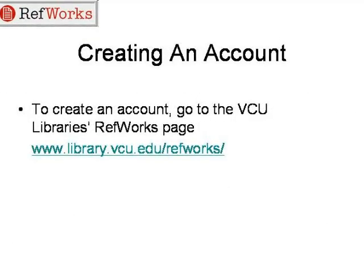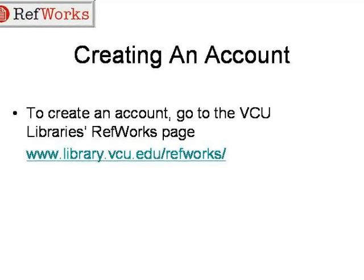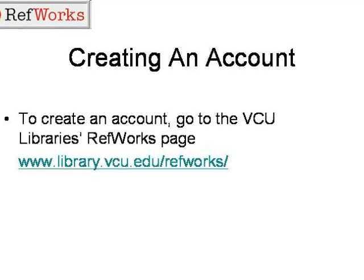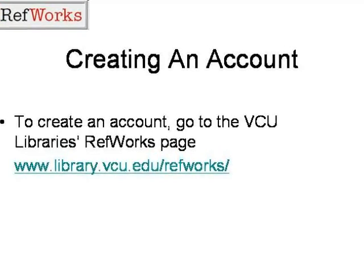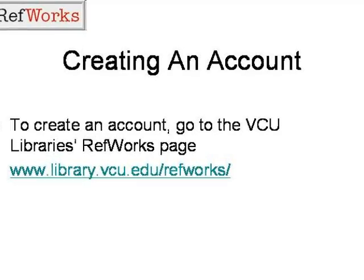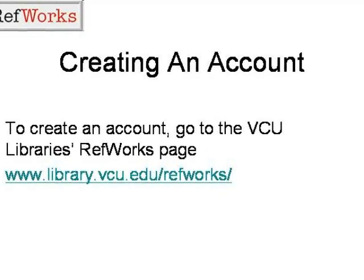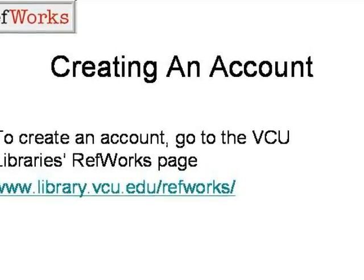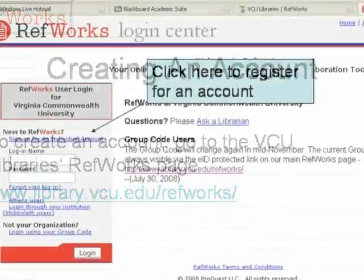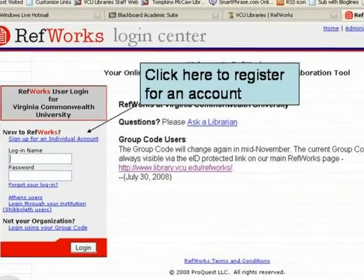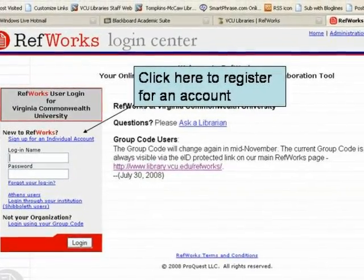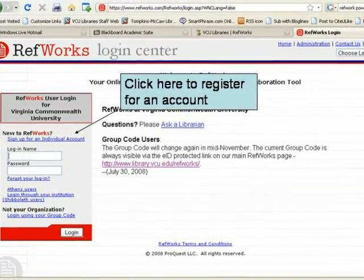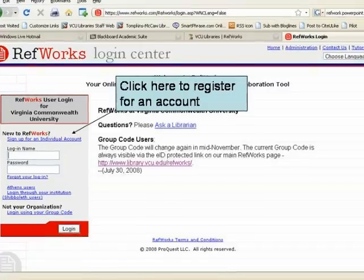Today we will talk about creating a RefWorks account. To create an account, go to the VCU Libraries webpage and then go to the RefWorks webpage. The address is www.library.vcu.edu/refworks. Once you're on the VCU Libraries RefWorks page, all you have to do is go to the link that says sign up for an individual account.